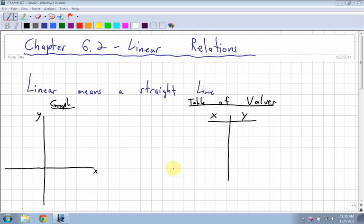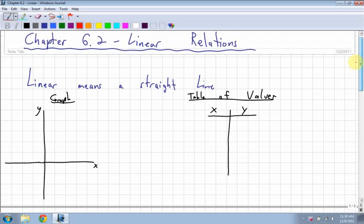Chapter 6.2 is Linear Relations, and linear basically means just a straight line. So for a graph, these are also found in your book as well, but on a graph, a linear line means that all the points lie in a straight line.